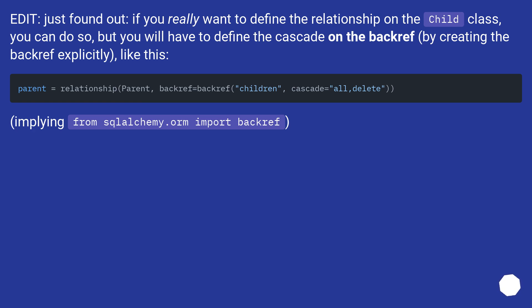Just found out: if you really want to define the relationship on the child class, you can do so, but you will have to define the cascade on the backref by creating the backref explicitly. You would import backref from SQLAlchemy ORM.